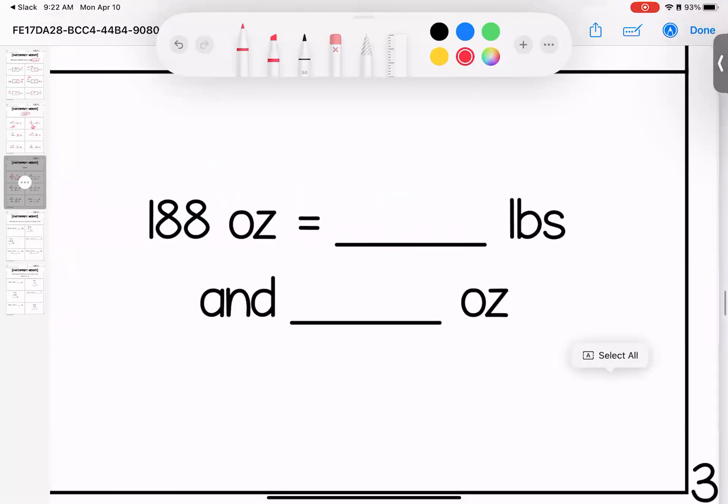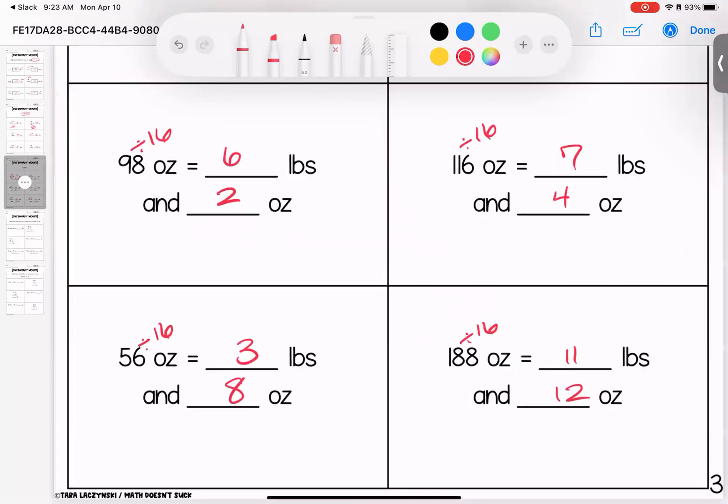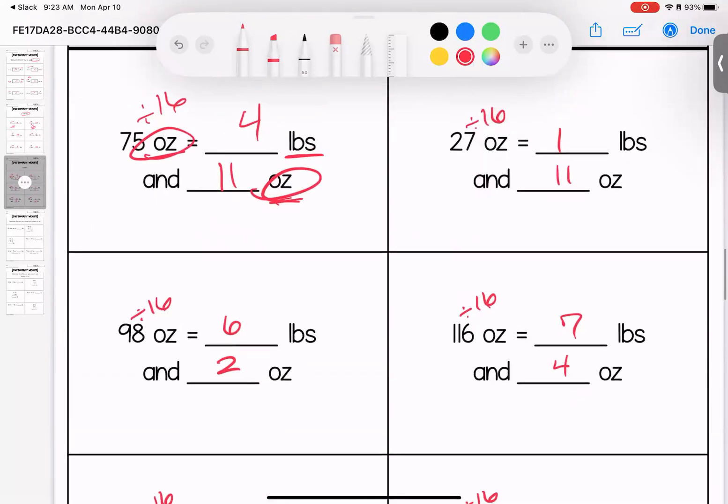Last one, 188. Again, we know at this point, we're dividing by 16. It's going to go in 11 times. 11 and 16 leaves me with a remainder of 12. If you have questions on this page, please bring them with you to class.